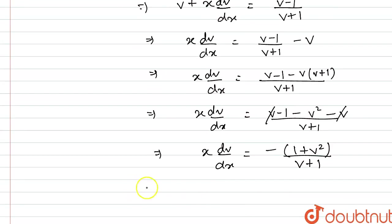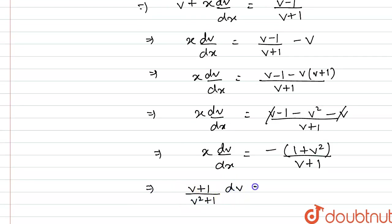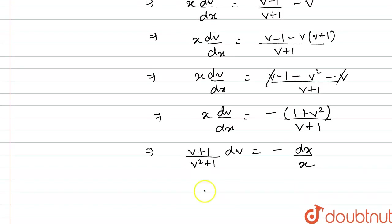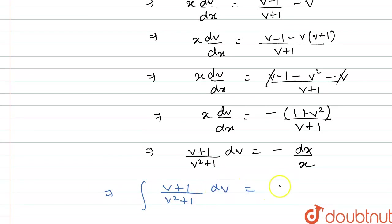Now we will simply separate the variables. What we get is (v + 1)/(v² + 1) dv = -dx/x. Now we will simply integrate both sides, so the integral of (v + 1)/(v² + 1) dv = -∫dx/x.